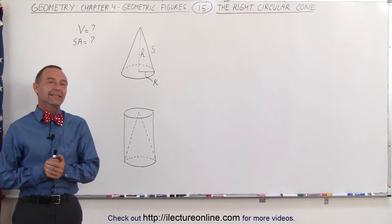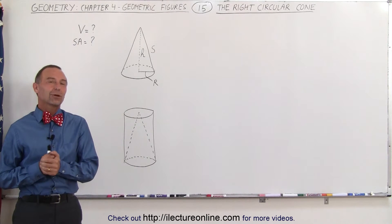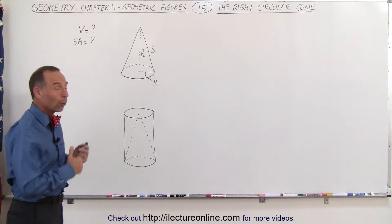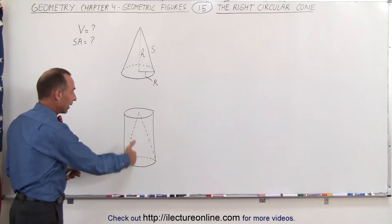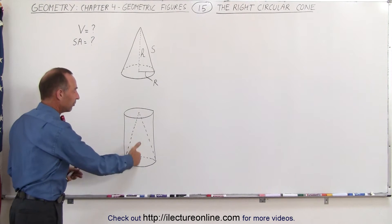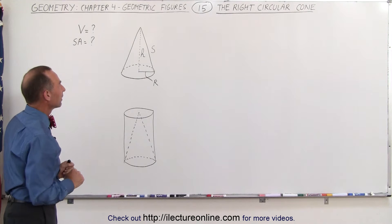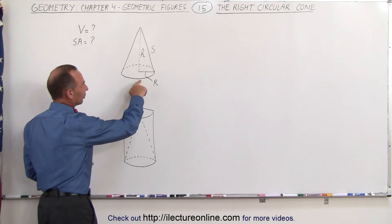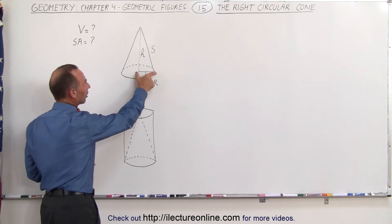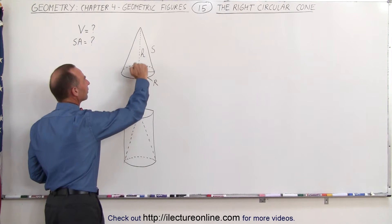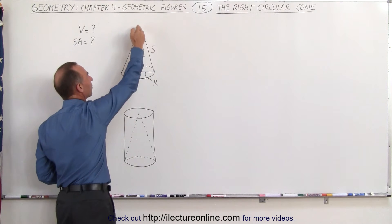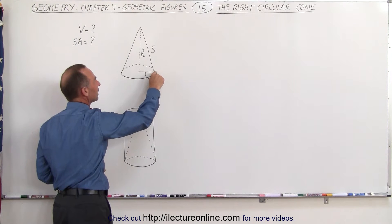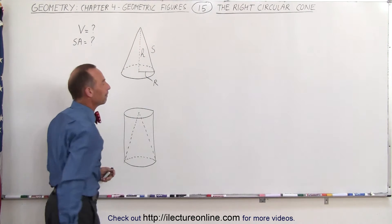Welcome to Electronline. Now let's take a look at the right circular cone. It's called the right circular cone because it's directed straight up from the base. Notice that the base is made up of a circle, so the radius of the circle equals R, the height of the cone equals H, and then we have what we call the slant height — the distance from the edge of the cone at the bottom to the very top.